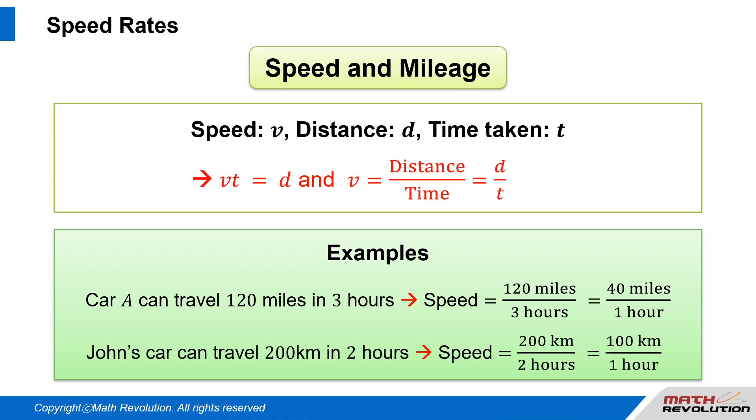If John's car can travel a distance of 200 kilometers in 2 hours, the speed of John's car will be 200 kilometers over 2 hours, which equals 100 kilometers over 1 hour, which equals 100 kilometers per hour.